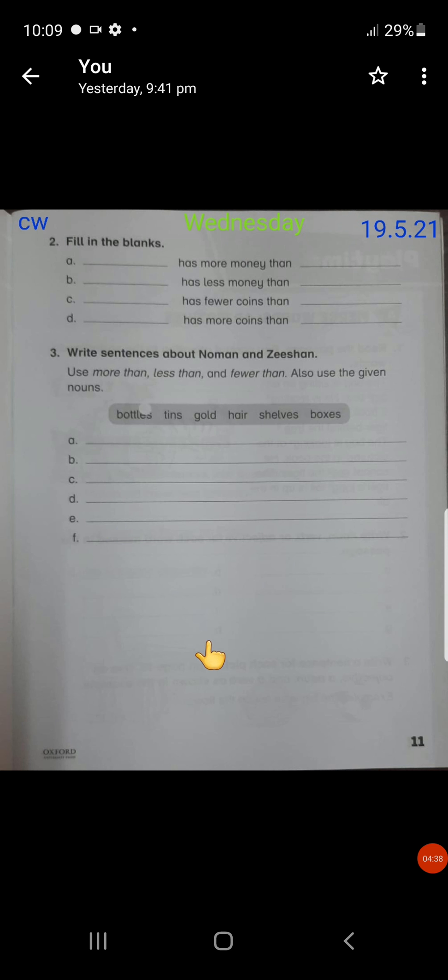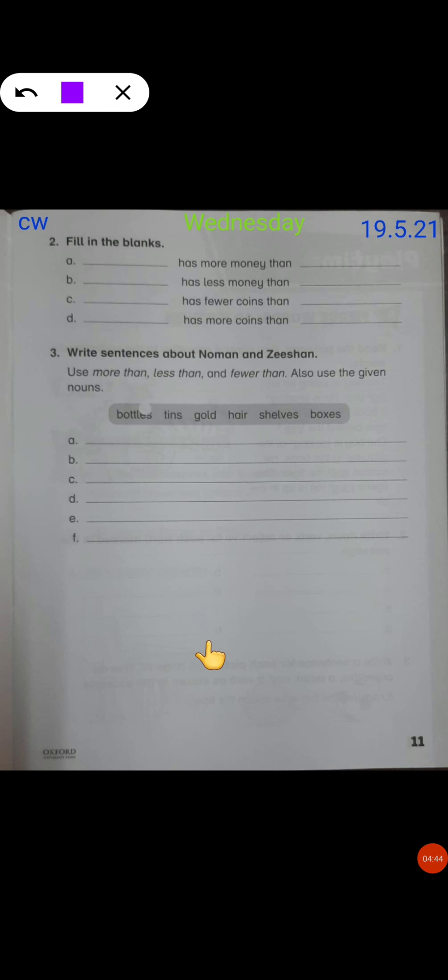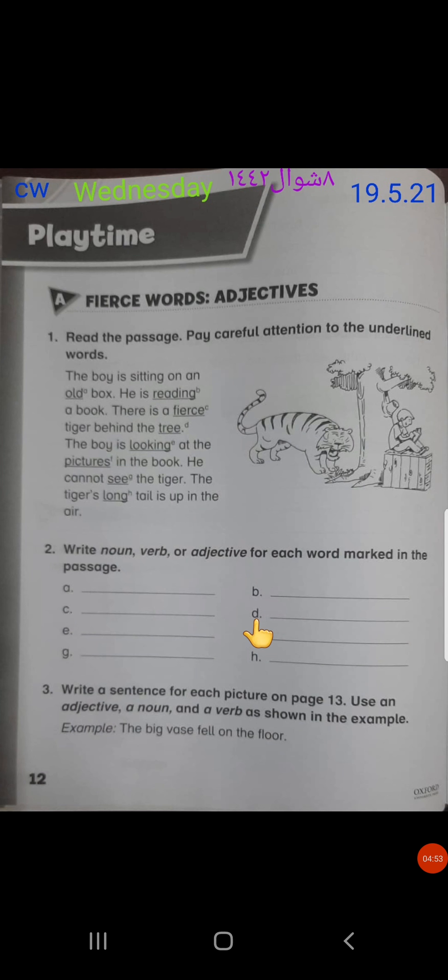As you can see on this page, in the drawer, Naman has fewer coins and Zishan has more coins. Very easy, very interesting. You can do it by your own. And here in exercise 3, let me tell you that we are not going to do this exercise. So after having done this exercise on page number 11, you have to turn to page number 12. On page number 12, we are going to do playtime exercise A1, 2 and 3. Fierce words, adjectives. Now, what are adjectives?